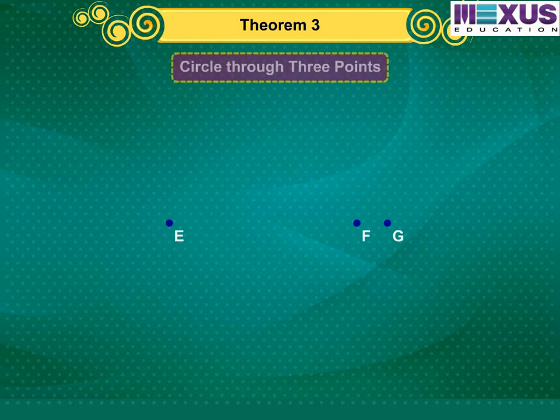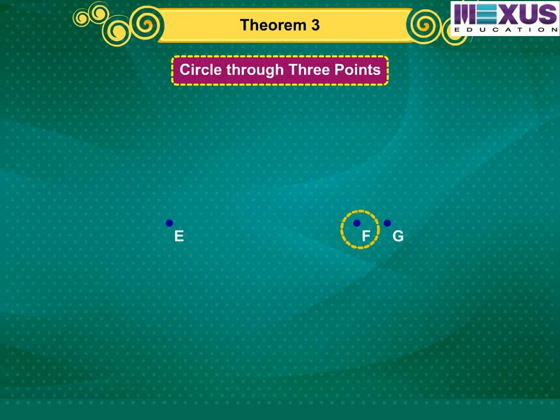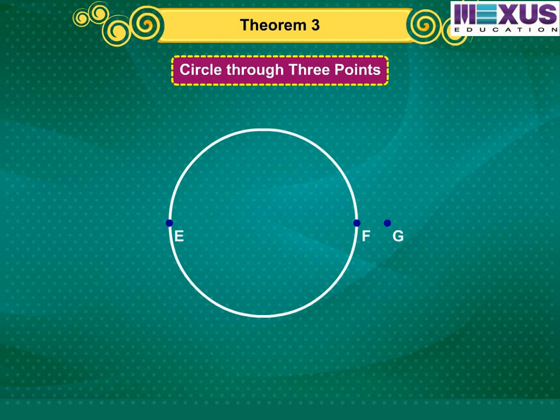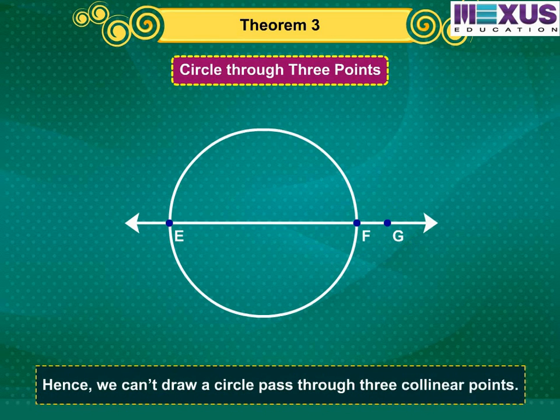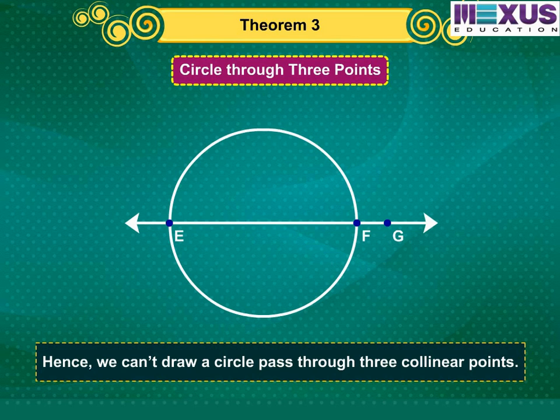What will happen when you take three points, E, F and G? Can you draw a circle passing through three collinear points? Let us try. We can see that if the points lie on a line, then the third point will lie inside or outside the circle passing through two points. Hence, we can't draw a circle passing through three collinear points.